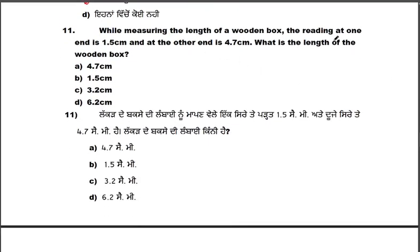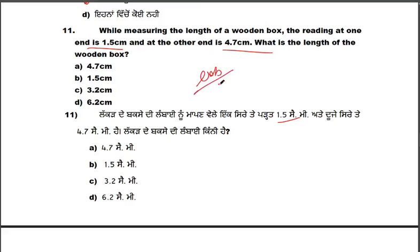Eleventh question: while measuring the length of a wooden box, the reading at one end is 1.5 cm and the other is 4.7 cm. What is the length of the wooden box? The length will be 4.7 minus 1.5, which gives the length of the box.